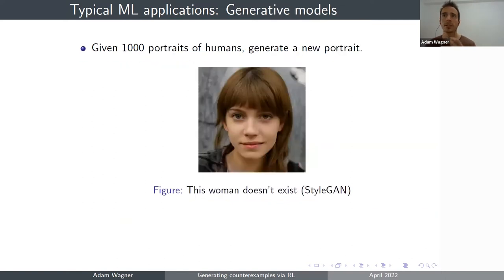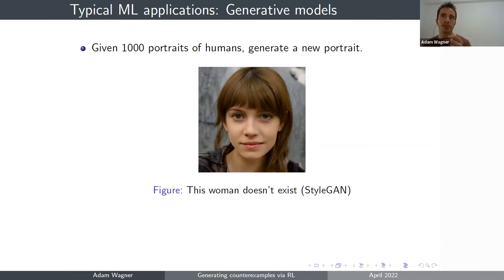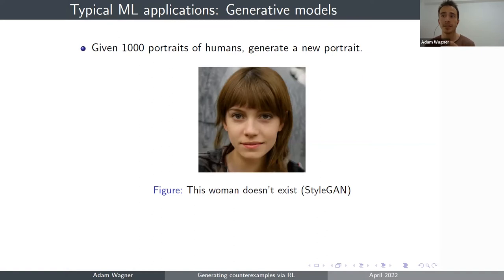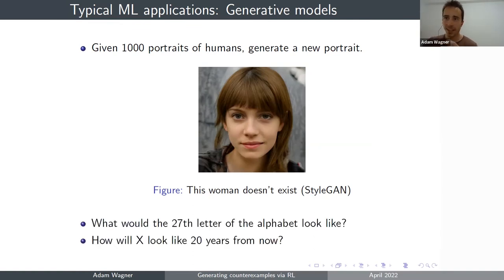A slightly different kind of problem is called generative problems, where instead of classifying or making predictions, you need to generate new things that fit into your training dataset. For example, you could start with a thousand pictures of human portraits and generate a new image that fits that dataset but isn't already in it. This picture here was generated by a program called Stylegan — this woman probably doesn't actually exist. Another example: if you know the first 26 letters of the alphabet, what would a potential 27th letter look like?